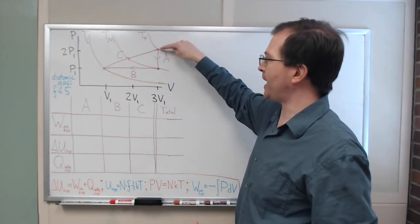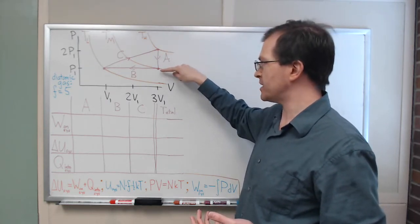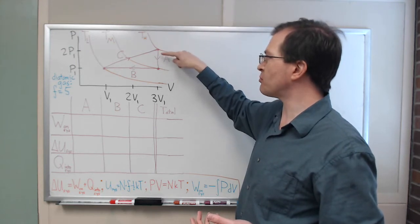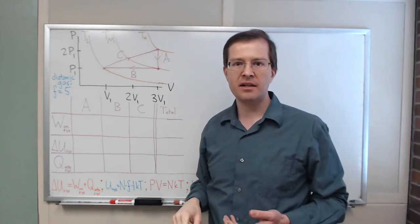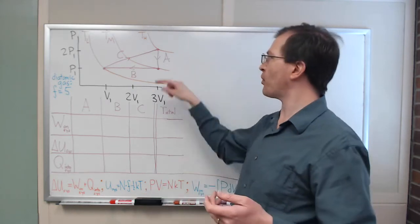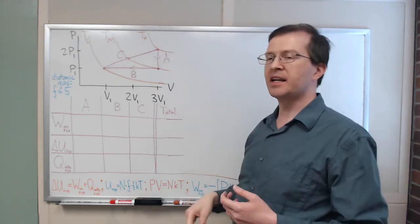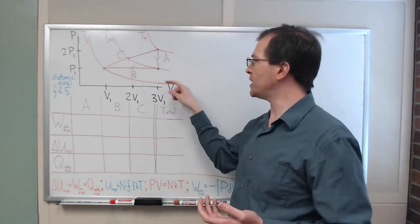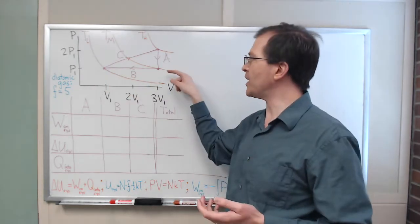And as drawn here, in step A, we're going to keep the volume fixed and reduce the pressure of the gas. You may be able to imagine things you could do to make that happen, but the process is drawn here. In step B, we're going to keep the pressure fixed and reduce the volume.